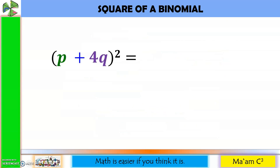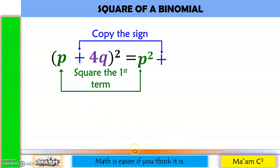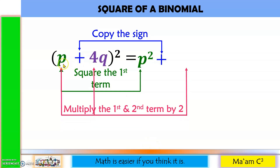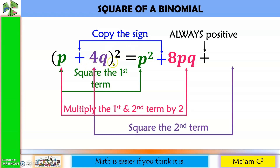Let's have another example. Square the first term: p squared. Copy the sign. Multiply the first and second terms by 2: p times 4q is 4pq, times 2 is 8pq. The third term is always positive. For the last term, square 4q: 4 squared is 16, q squared is q squared, giving us 16q squared.